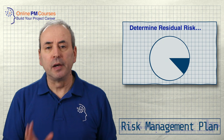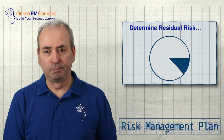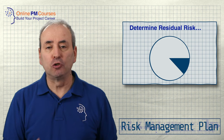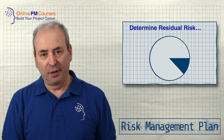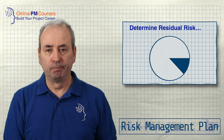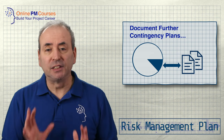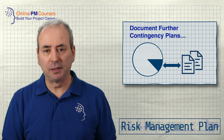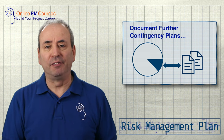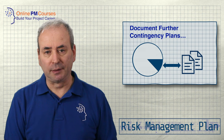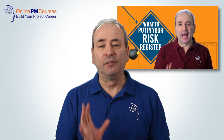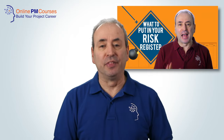When you've done that, step seven is to determine the residual risk. Does your management plan address the whole risk? If it doesn't, what is left and how much of a threat is that? If a residual risk remains, step eight is to document your contingency plans that you can put into action if any of that residual risk materializes. So the process for creating a risk mitigation plan is straightforward — eight steps you can follow for each risk in your risk register.